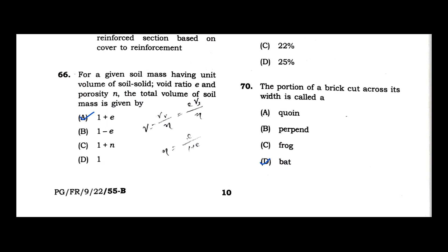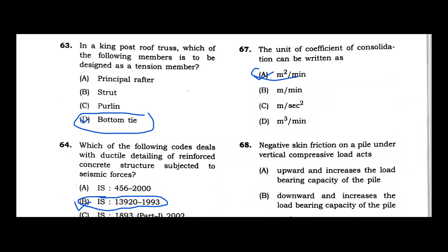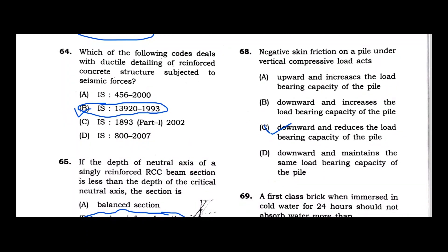Question 66: For a given soil mass having unit volume of soil solid, void ratio E and porosity N, the total volume of the soil mass is basically 1 plus E. The volume of the soil solid or volume of the soil mass is 1. The total volume equals 1 plus E. Option A is correct. Question 67: The unit of coefficient of consolidation is m²/min.